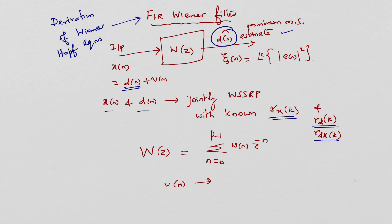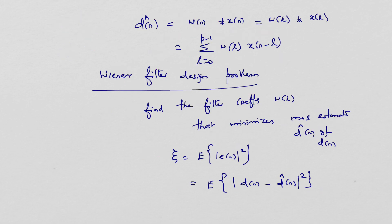Let us first identify the system function of the Wiener filter W(z), where w(n) are called the impulse response of the Wiener filter — the optimum filter impulse response. The order of the filter runs from zero to p minus one, so this is a p-th order Wiener filter.